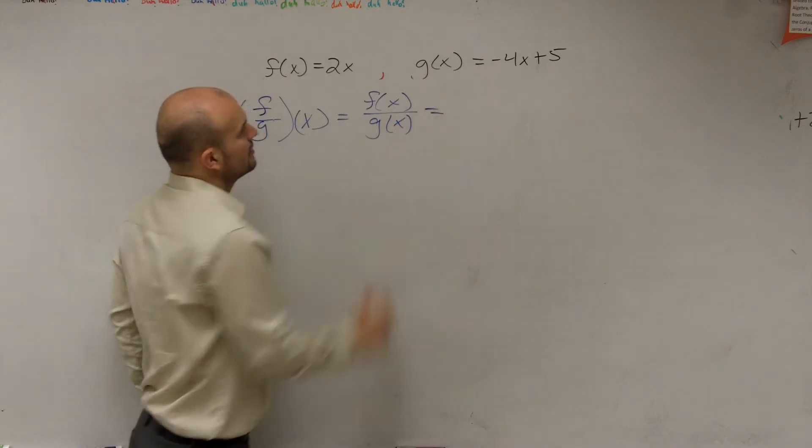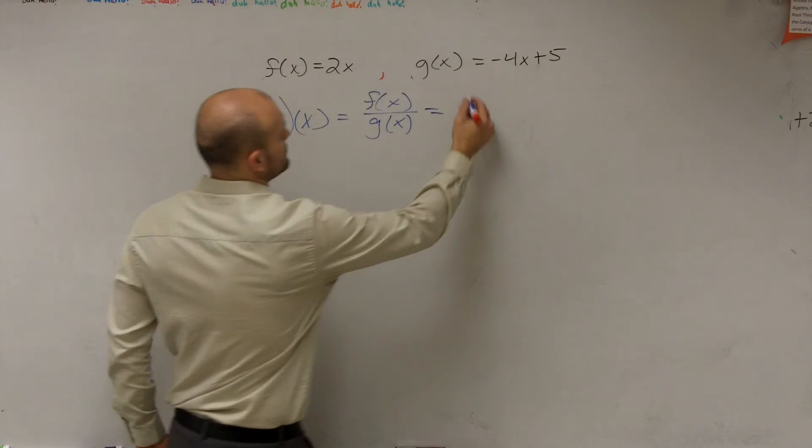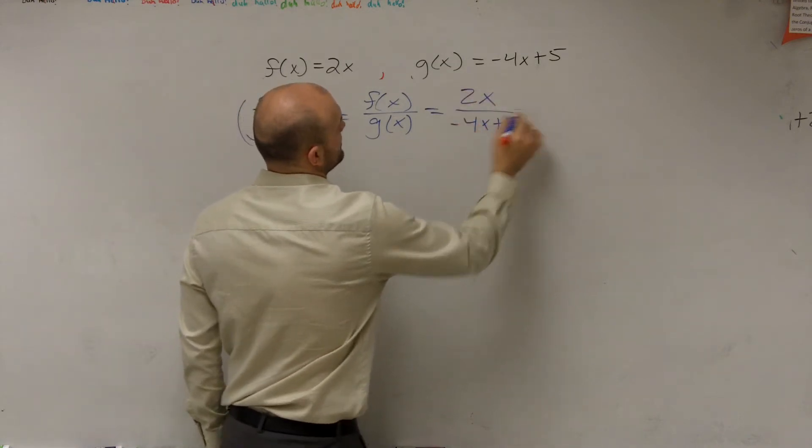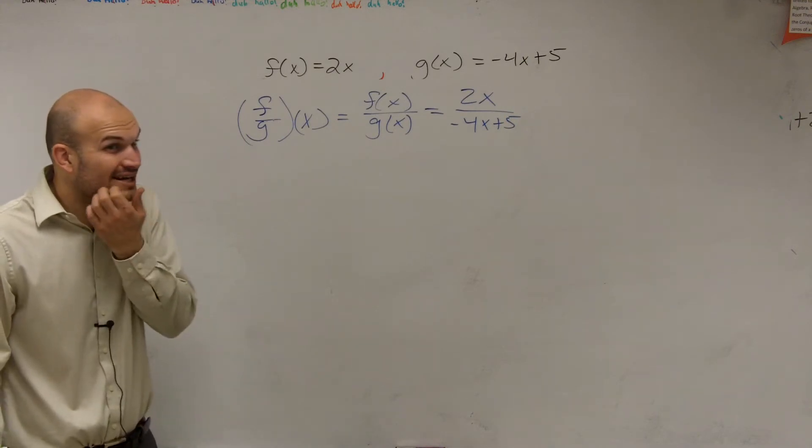So now, let's just put in what my f of x is. 2x over negative 4x plus 5. And then you say, all right, now what, right?